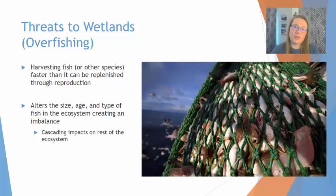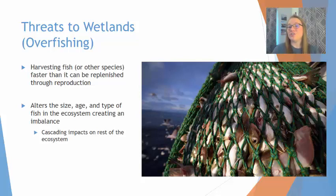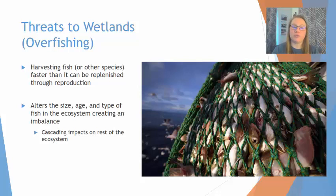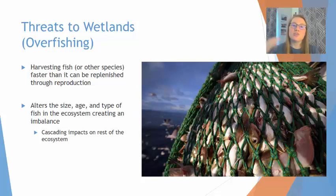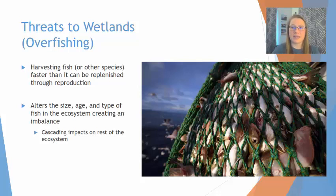Overfishing can also impact wetlands. When a commercial fishing operation is harvesting fish, or even if there are too many recreational fishermen in a specific area, we can catch fish faster than they can naturally reproduce and replenish the population. This is going to alter the size, age, and type of fish found in an ecosystem, and that can create a cascading impact on the rest of the ecosystem through what's called a trophic cascade.